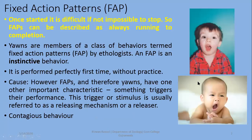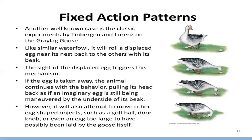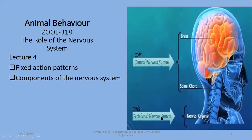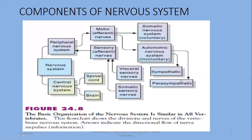Such behaviors are known as fixed action patterns or FAPs — action patterns which, once stimulated, are difficult or even impossible to stop. Now, to discuss the role of the nervous system on behavior, you must know its basic components. The peripheral nervous system includes all nerves found in the body, while the central nervous system includes two main components: the brain and spinal cord. Brain and spinal cord contain interneurons, while sensory and motor neurons are part of the peripheral nervous system.